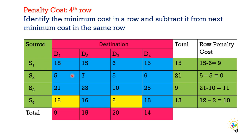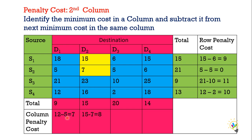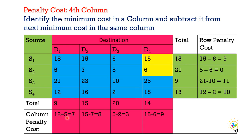Now we must calculate row penalty cost first, and after that we will calculate column penalty cost. For each column, we calculate the penalty the same way — minimum value minus next minimum value. Column 1: 12 minus 5 equals 7. Destination 2: 15 minus 7 equals 8. Third destination: 5 minus 2 equals 3. Fourth: 15 minus 6 equals 9. So in Vogel's Approximation Method, the first step is to calculate penalty costs for each row and each column.